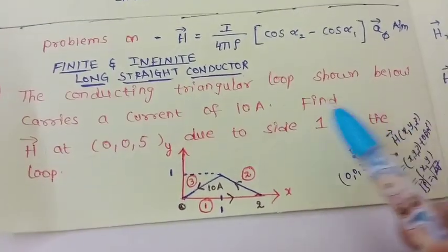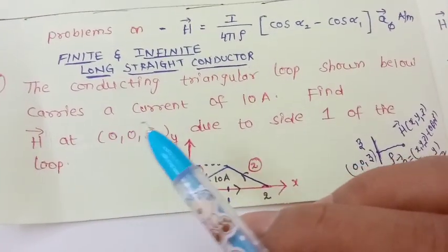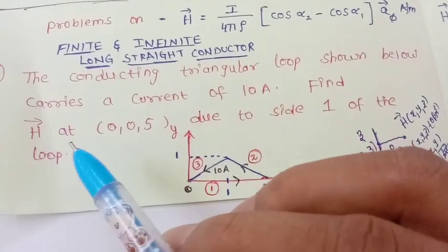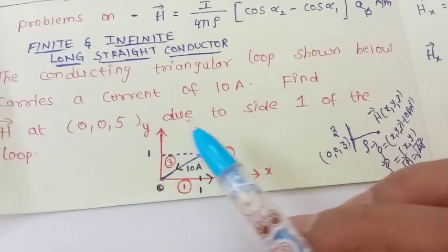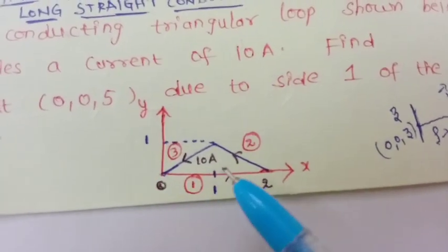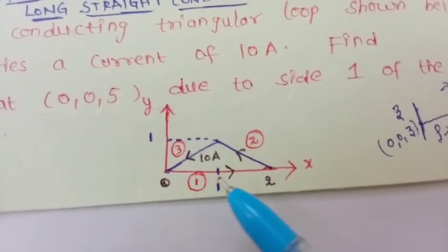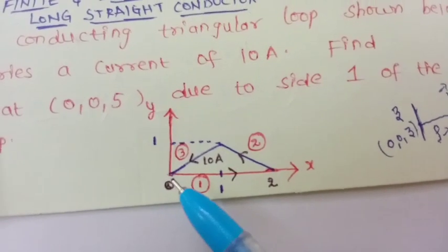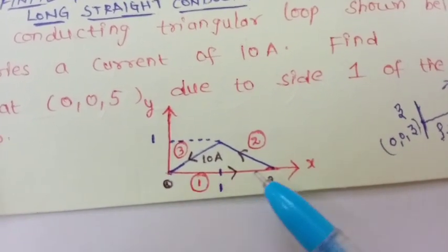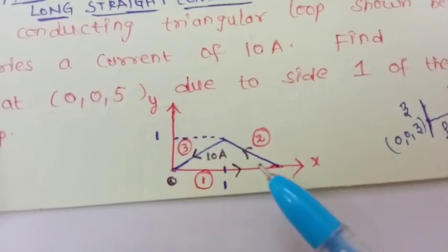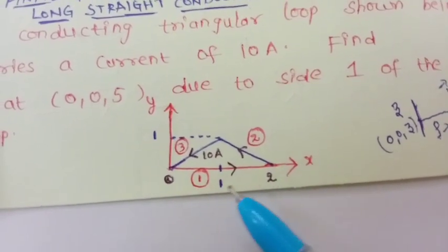The conducting triangular loop shown below carries a current of 10 A. Find the magnetic field intensity at a point due to side one of the loop. Observe this figure very carefully. This is side one of the loop. The current is 10 A, moving from the origin to the positive x-axis. The length of the conductor is 2 meters.